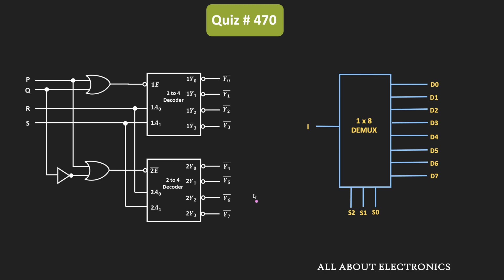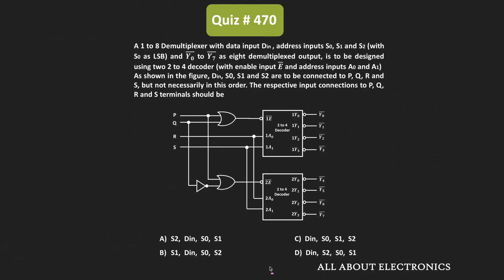In this way, this circuit works as a 1-to-8 demultiplexer. In this demultiplexer, the Y0 to Y7 outputs are active-high. For this circuit to work as a demultiplexer, the four input terminals should be connected to DIN, S2, S0, and S1 inputs respectively — that is, P=DIN, Q=S2, R=S0, and S=S1. From this, we can say that option D is the correct answer.